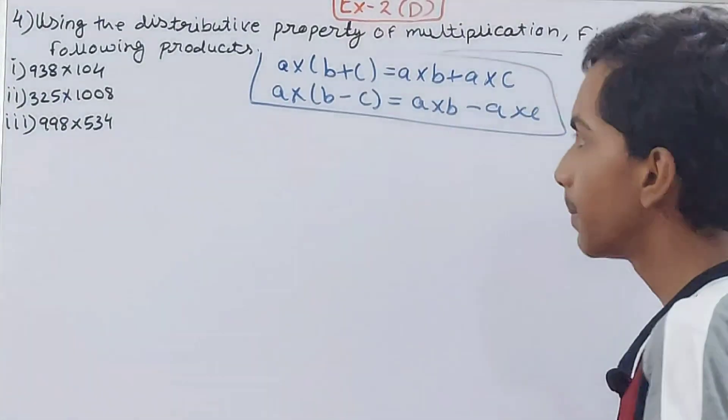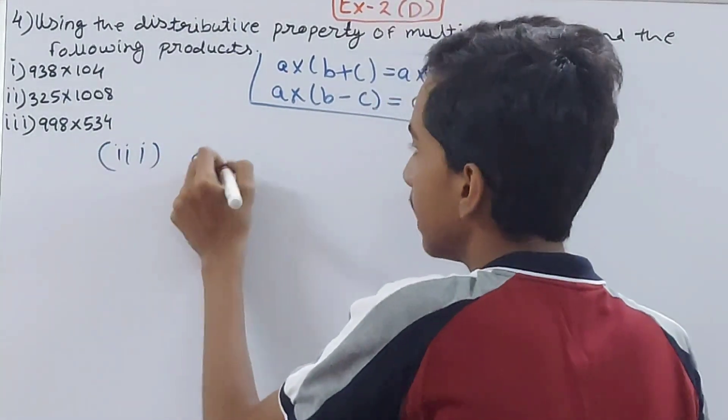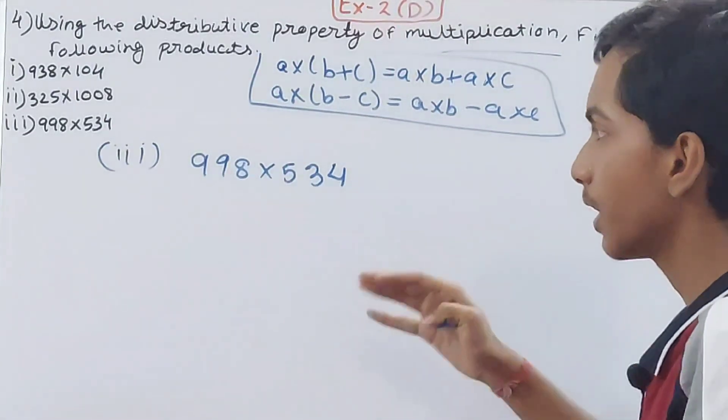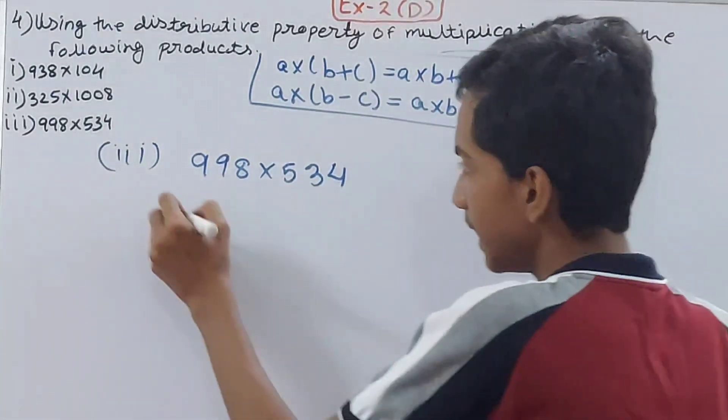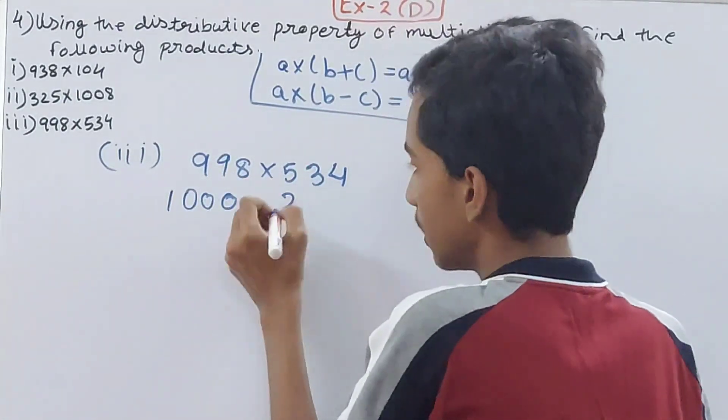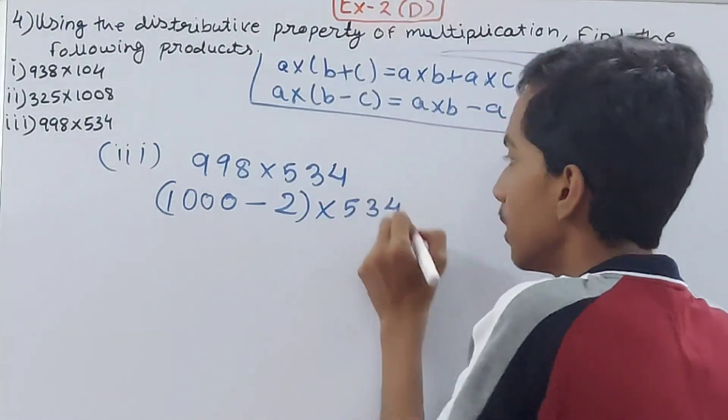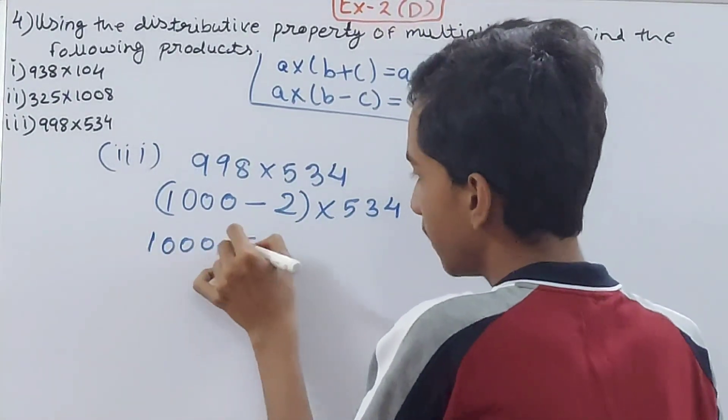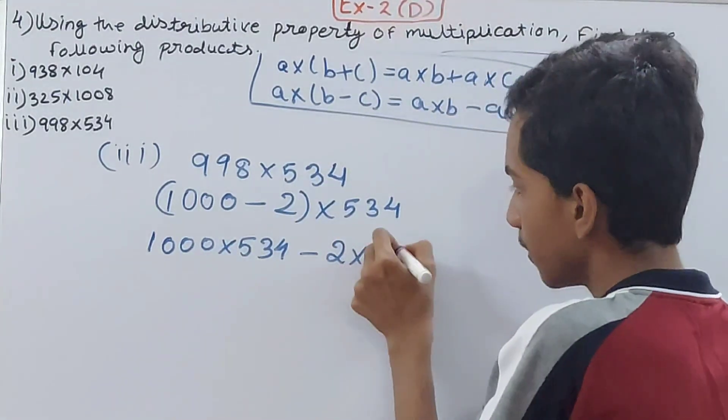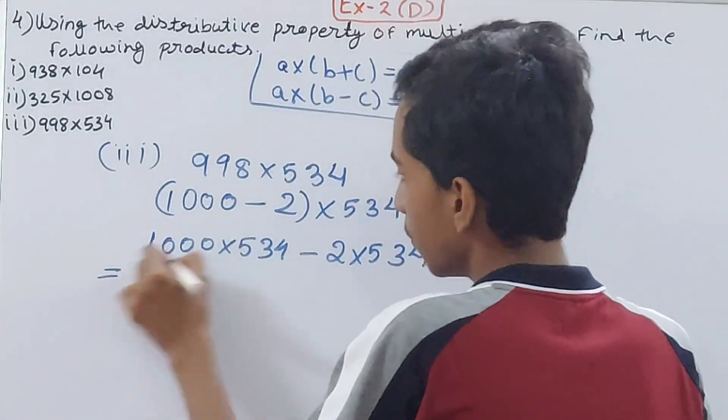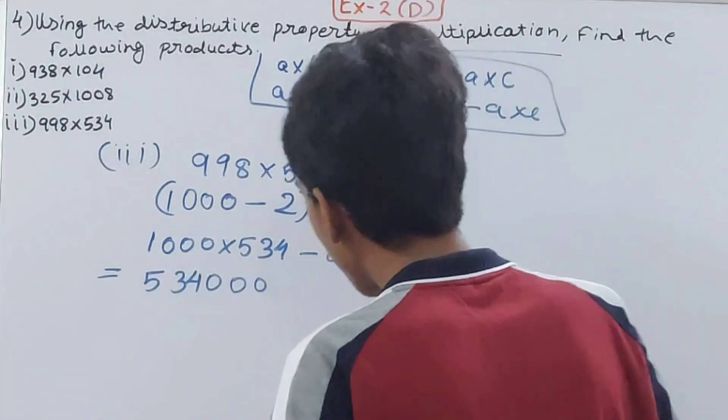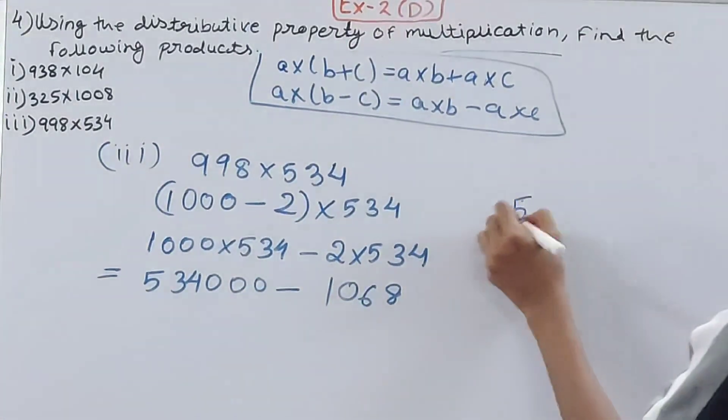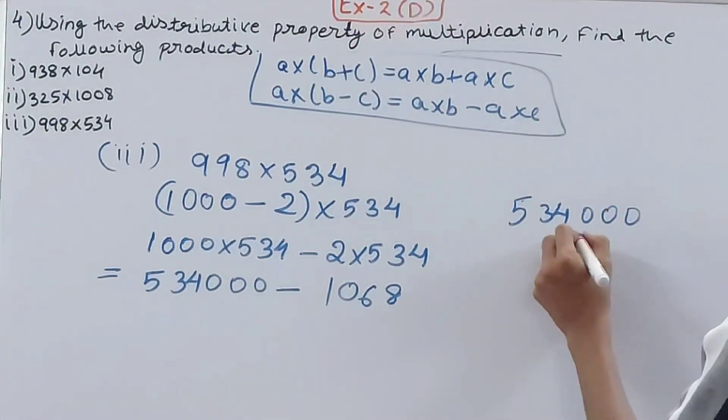The third part: 998 × 534. Look for 100 or 1000 or 10,000. I can write 998 as (1000 - 2) × 534. Multiply: 1000 × 534 minus 2 × 534. 534,000 minus 1,068.